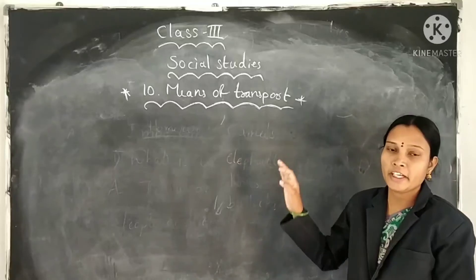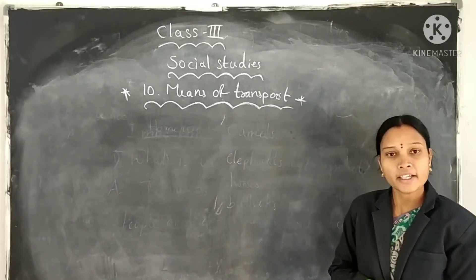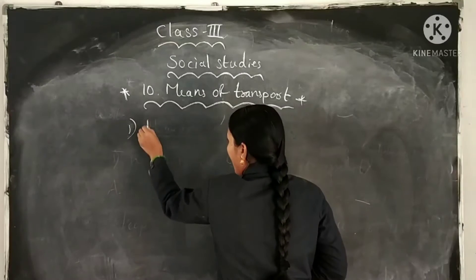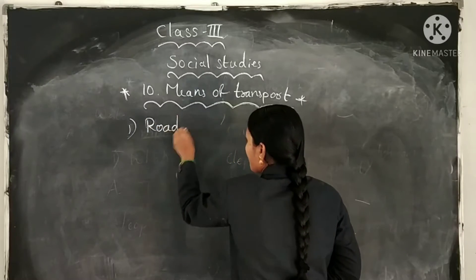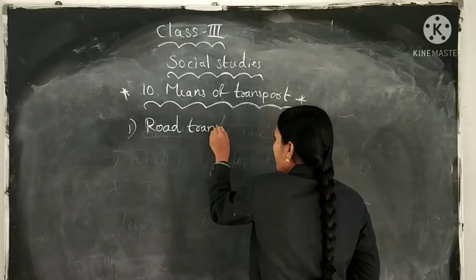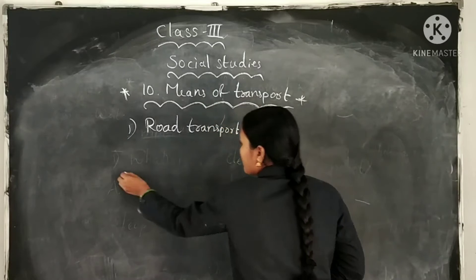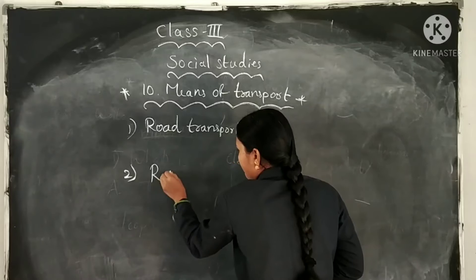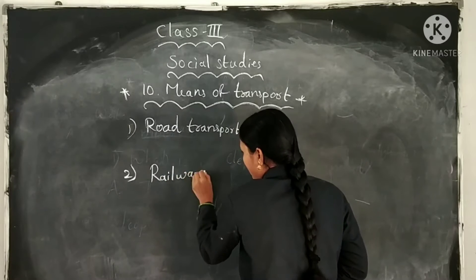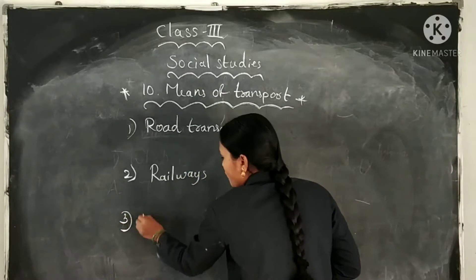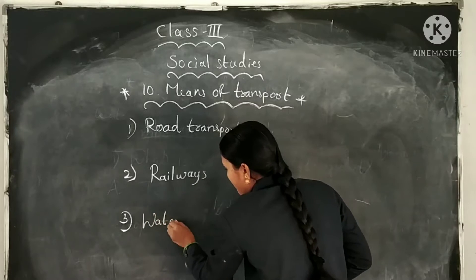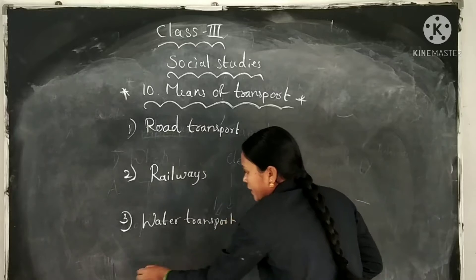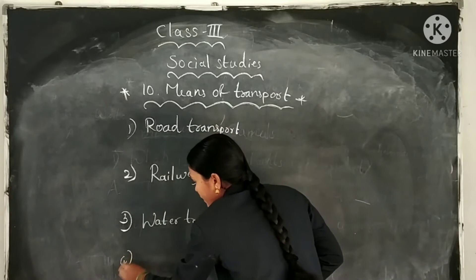The means of transport is divided into four types: first, road transport; second, railways; third, water transport; and fourth, air transport.